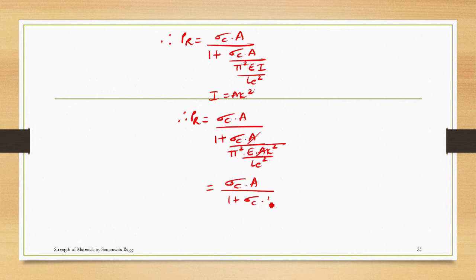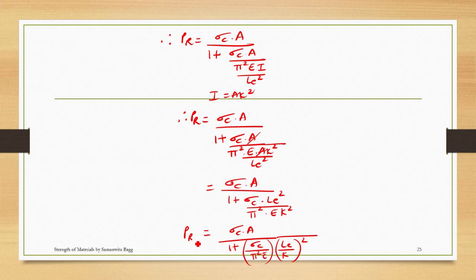And Le upon K the whole square can be kept as another term. This term, sigma c upon pi squared E, has been labeled as alpha, which is Rankine's constant.